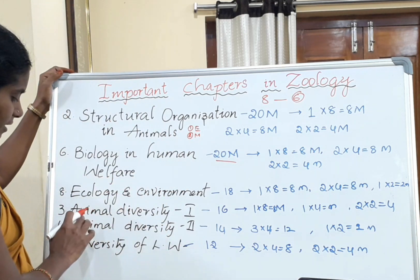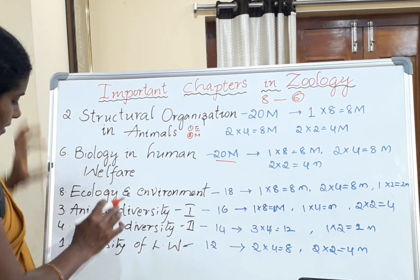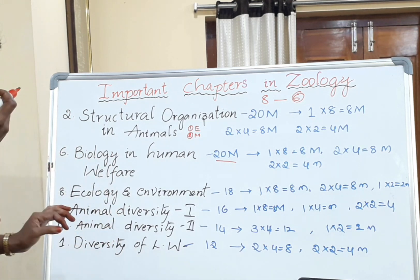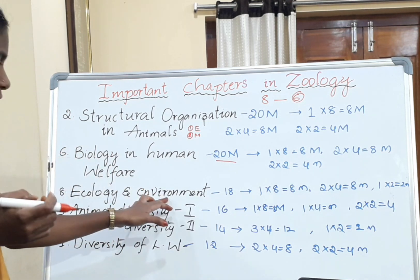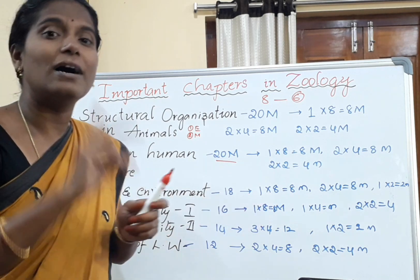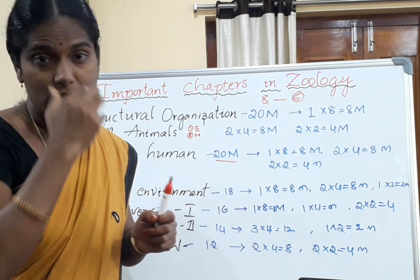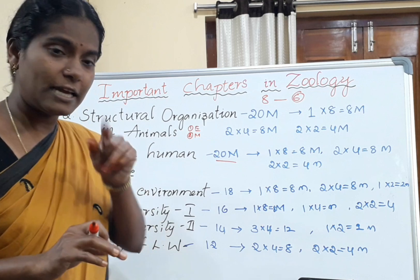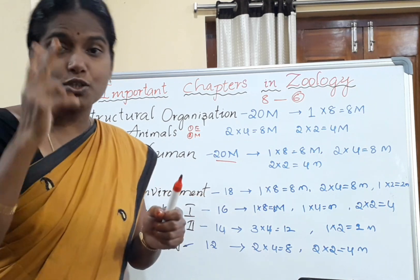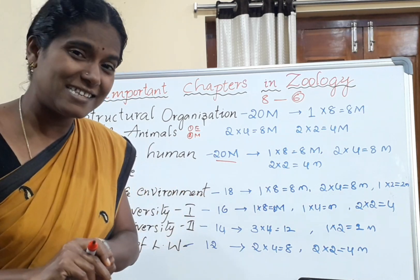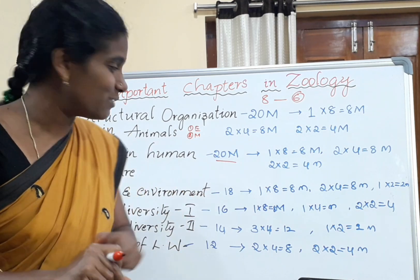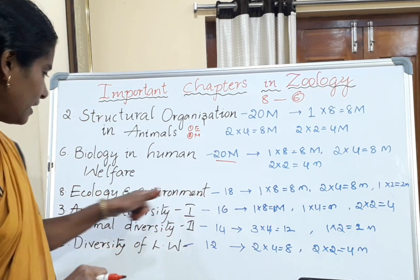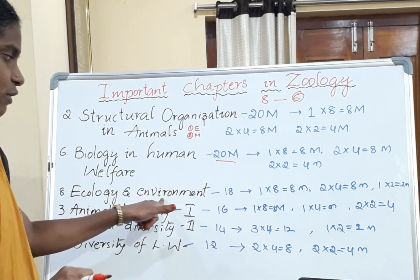Next, go ahead with Chapter 8, Ecology and Environment. Here you have two essay questions only: temperature as an ecological factor is one, and food chains is the second. These two essay questions are easy for students to prepare instead of the full five.